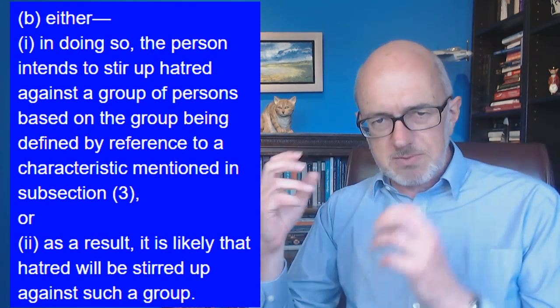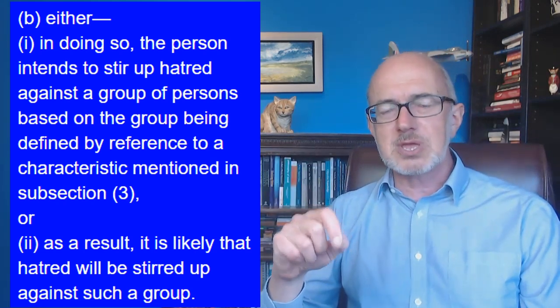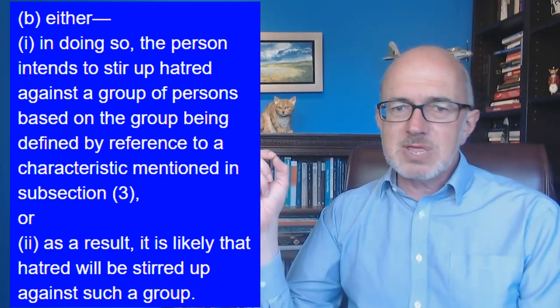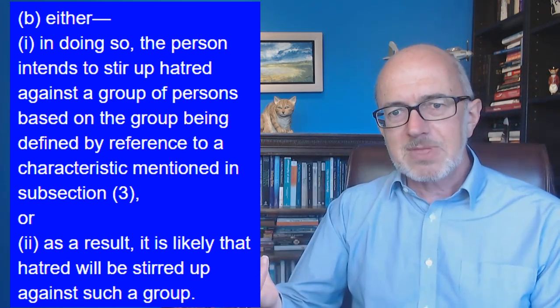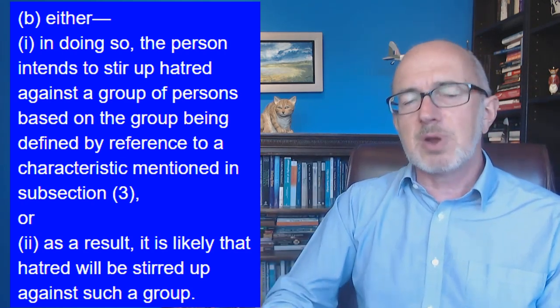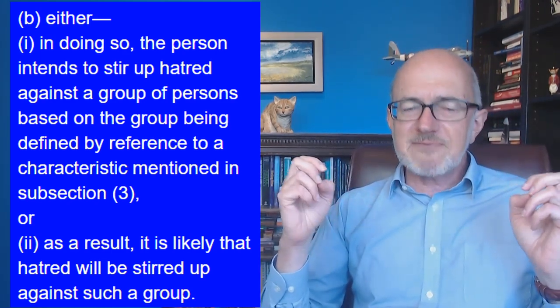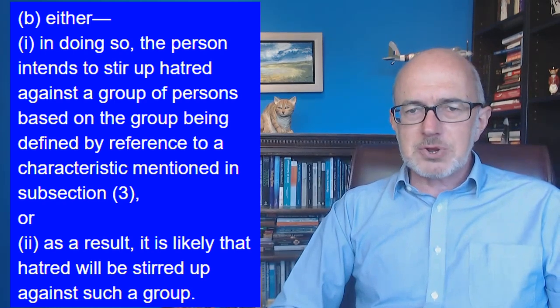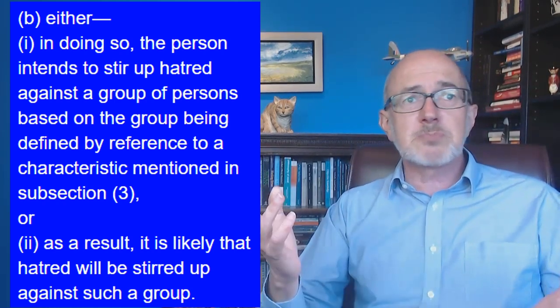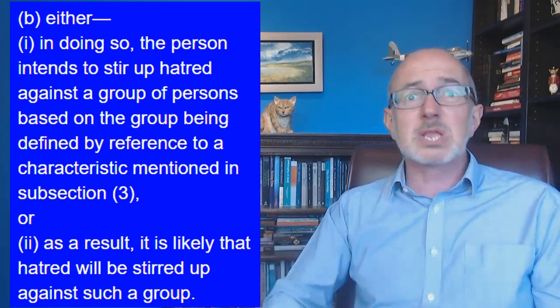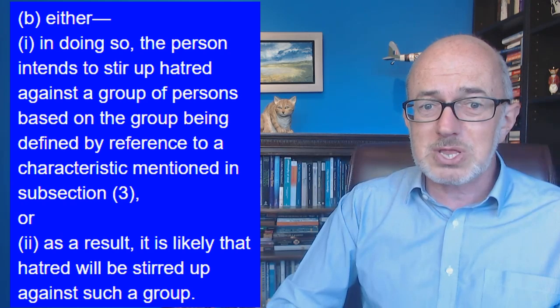So you'd be threatening and abusive and then if you intended that to stir up hatred, then you're guilty. If you didn't intend it to stir up hatred, you could still be guilty if they decide that it probably would have stirred it up as well. In their notes they explain why they didn't say you have to be intending to stir up hatred. They said that might be difficult to prove. So if it's difficult to prove, why not just say let's not bother proving it then.